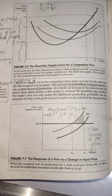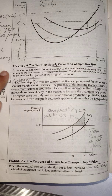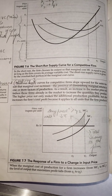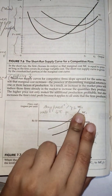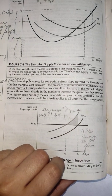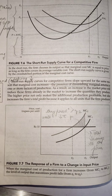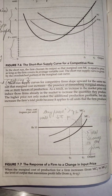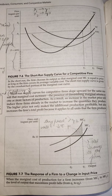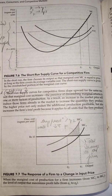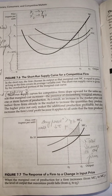The short-term supply curves for competitive firms slope upward for the same reason that marginal cost increases — the presence of diminishing marginal returns to one or more variable factors of production. This is the short term, so only variable factors are affected.